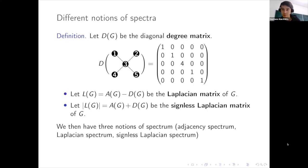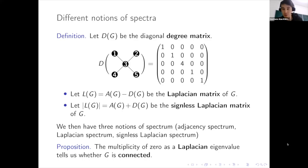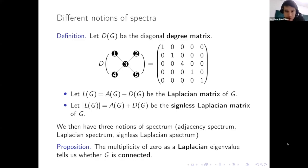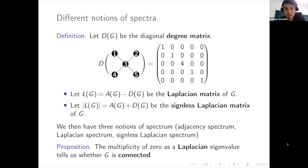These three matrices — adjacency, Laplacian, and signless Laplacian — give three different notions of spectrum. A really important property of the Laplacian spectrum is that it tells you whether a graph is connected: just count how many times zero appears as an eigenvalue. Connectivity is crucial because once we know a graph is connected it gives us a starting point — we can begin identifying features of the graph and building them out using statistical information from the adjacency spectrum.